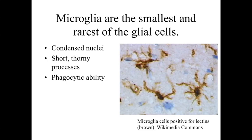The microglia are the smallest and the rarest of the glial cells. They have a fairly condensed nucleus and relatively short, thorny processes, making them difficult to identify under normal circumstances without special or antibody stains. A few are scattered throughout the central nervous system normally, but in areas of neuronal injury, damage, or cell death, microglia proliferate and migrate to those areas due to their phagocytic ability — essentially functioning as brain macrophages, cleaning up damaged regions.